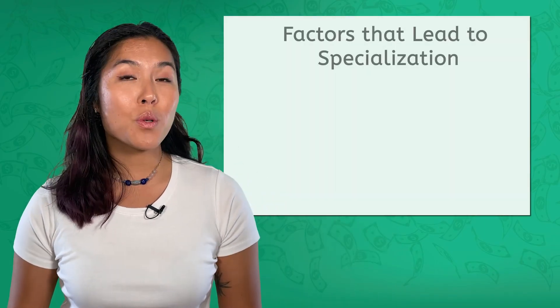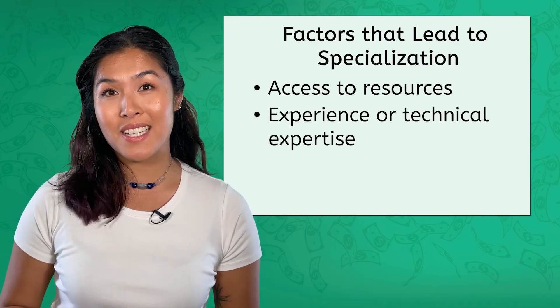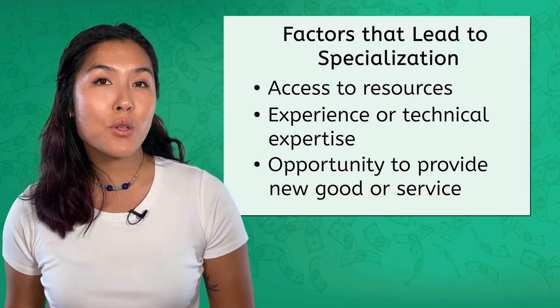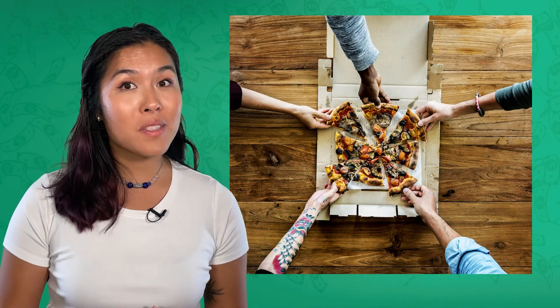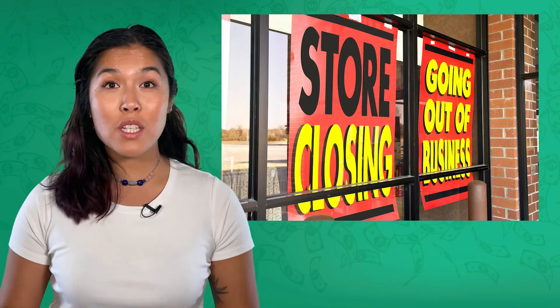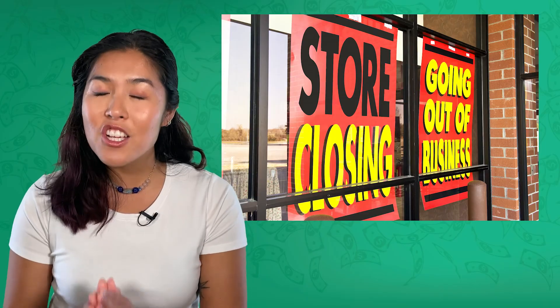Let's take a moment to recap. Many businesses choose to focus on a good or service that they have an advantage producing — a process known as specialization. Individuals and firms can specialize if they have access to certain resources, have experience or technical expertise in producing a good, or see an opportunity to provide a new good or service. Specialization allows individuals, firms, and countries to produce a good more efficiently, which is beneficial to both producers and consumers, and it also encourages trade and innovation. But disruptions to resources and supplies can have significant negative impacts to businesses that specialize in a single good or service.